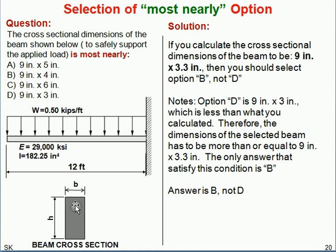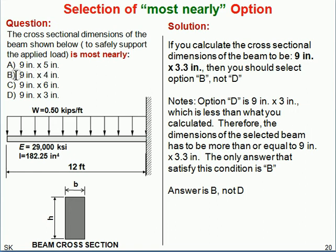Now the same beam problem, but this time you are designing the cross-section dimensions — width b and height h. You calculate 9 inches high and 3.3 inches wide. Since all choices have 9-inch height, you focus on the width. You cannot select 3 inches because that would be under-design and unsafe. The answer is nine by four (choice B), which is conservative — never design below your calculated requirement.